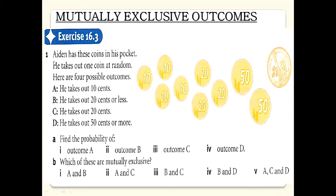Now let's start question number one. Aiden has these coins in his pocket and takes out one coin at random. There are four possible outcomes: A — he takes out a 10-cent coin. How many 10-cent coins are there? The probability of A is 4 out of 10, which equals 2 by 5. For B — he takes out 20 cents or less.